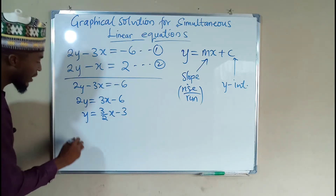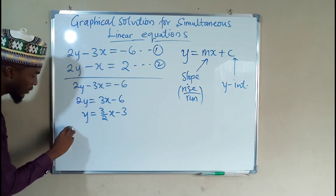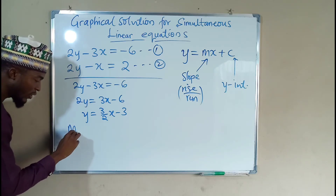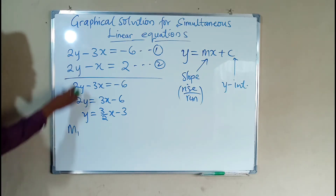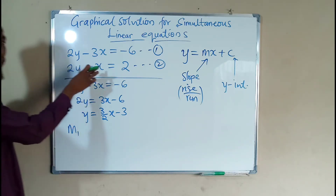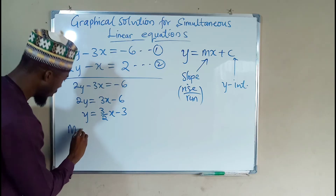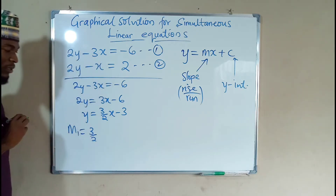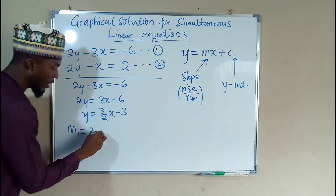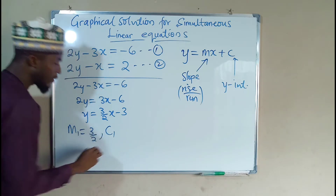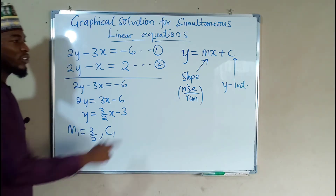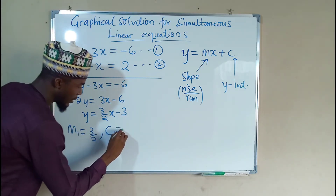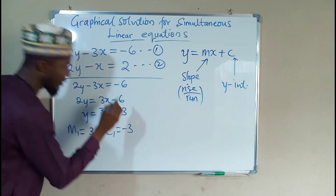Hence, we can say for our slope m1, because we have another equation, m1 equals 3 over 2. And c1, which is the y-intercept for this equation, is negative 3.